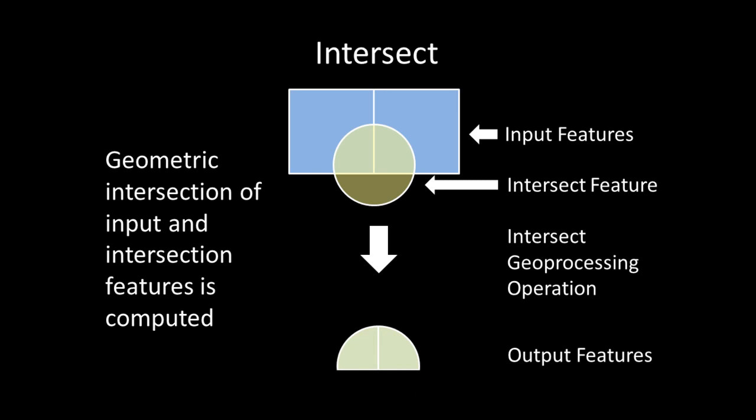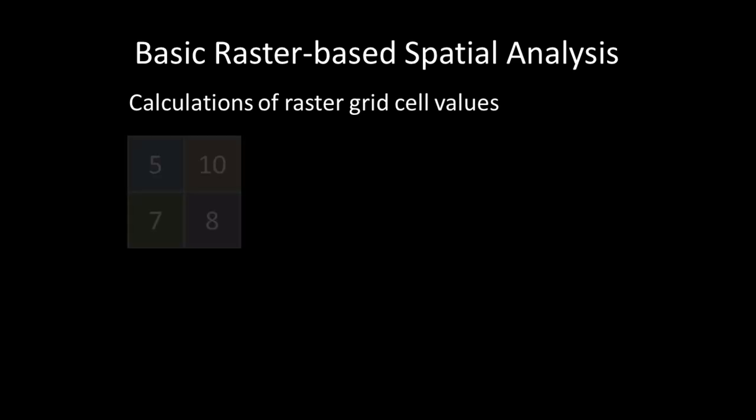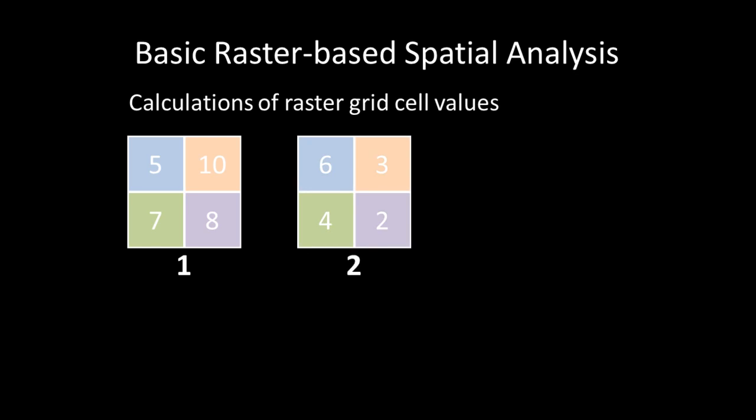Raster spatial analysis works on doing calculations of raster grid cell values. One way to begin understanding raster-based spatial analysis is map algebra — the idea of doing various mathematical operations on raster cells to create a new output raster. For example, given two raster data files where colors in each cell represent the same cell in terms of spatial extent, the two rasters can be added together on a cell-by-cell basis, creating a new output raster with the combined values of the two input rasters.